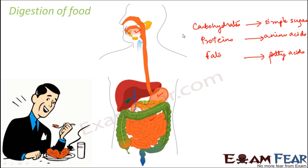This means there is a change in composition taking place. Initially the food was in the form of carbohydrates, proteins, or fats, but now it gets broken down into its simplest forms. Since there is a change in chemical composition, digestion of food is a chemical change.